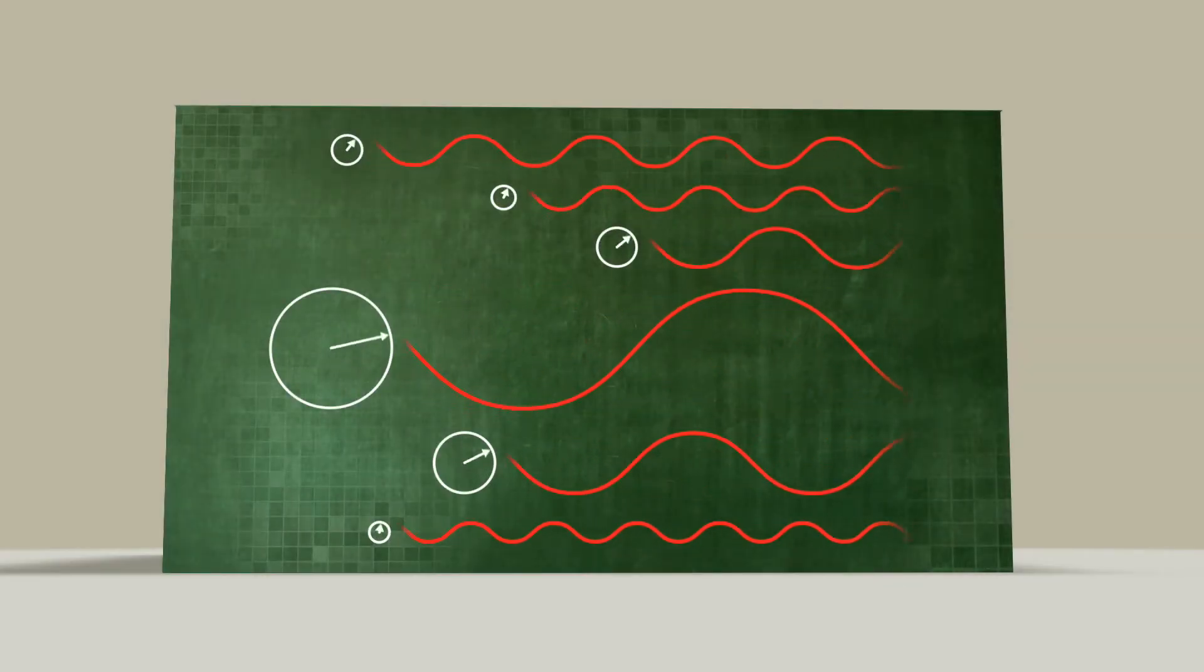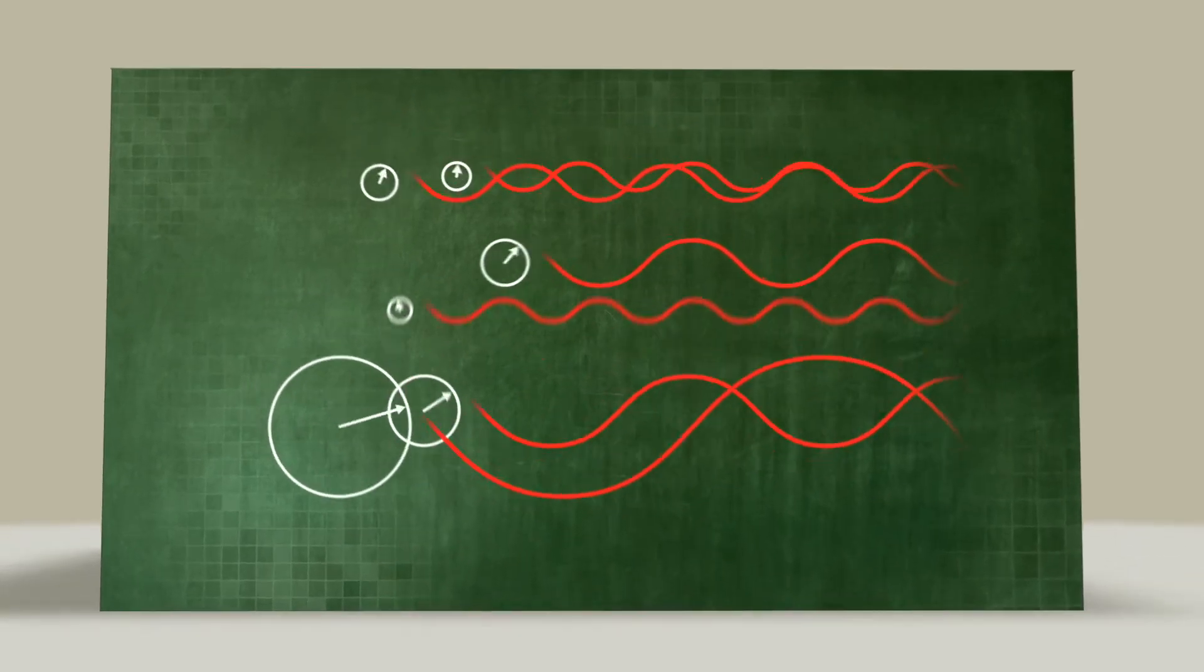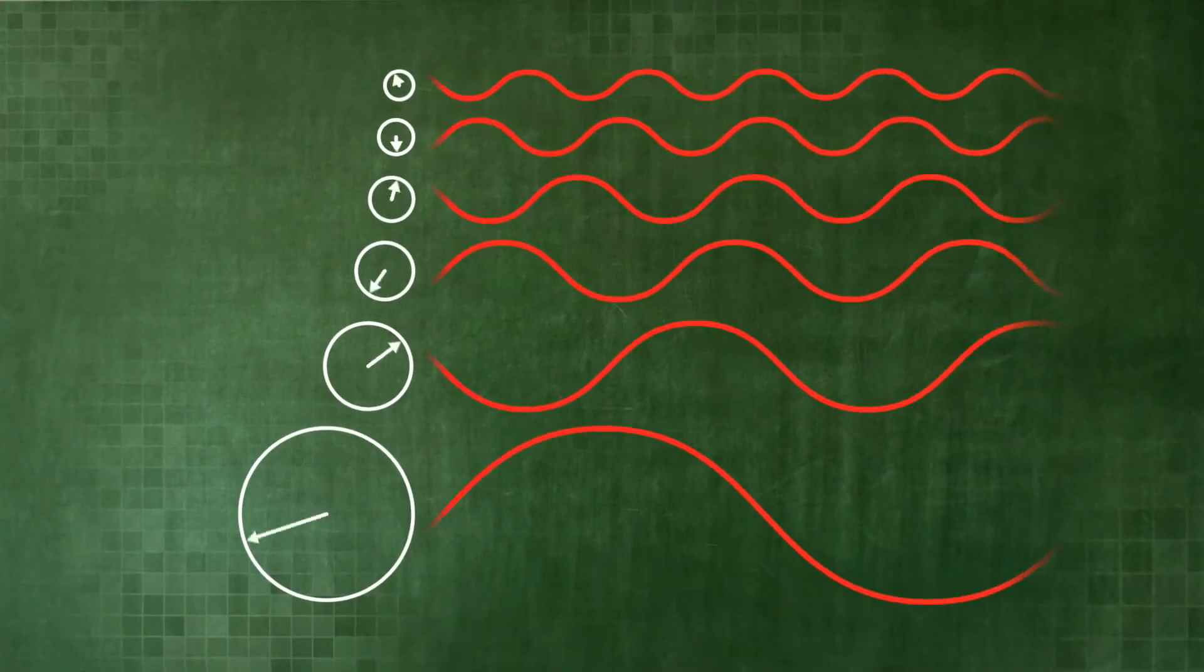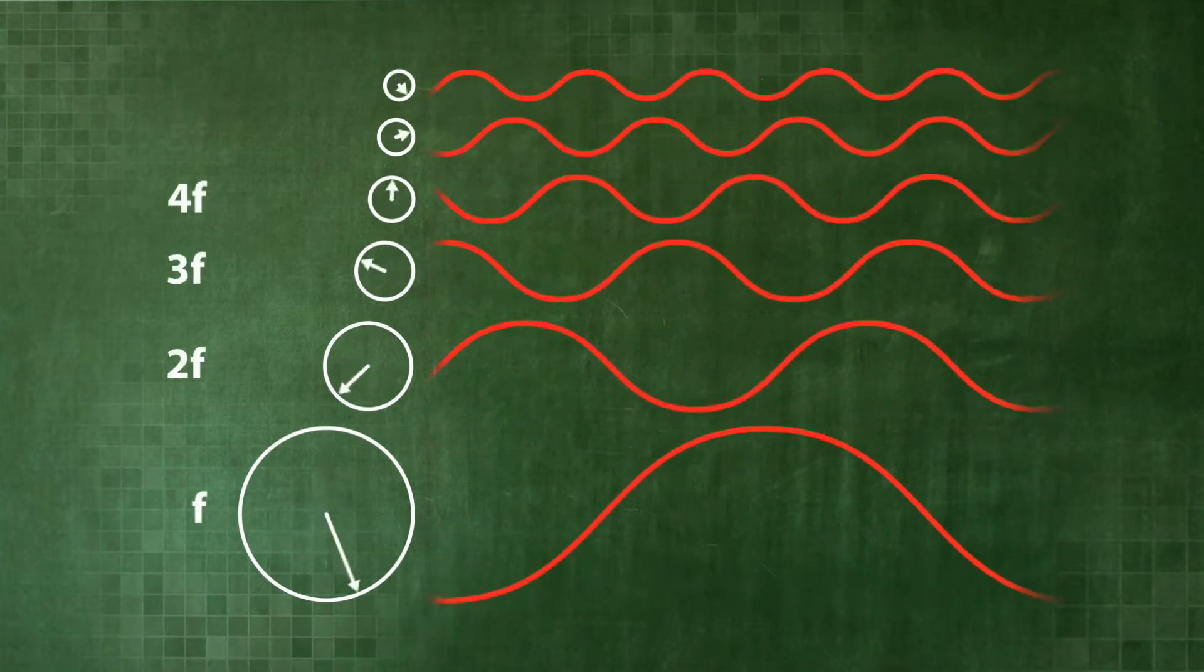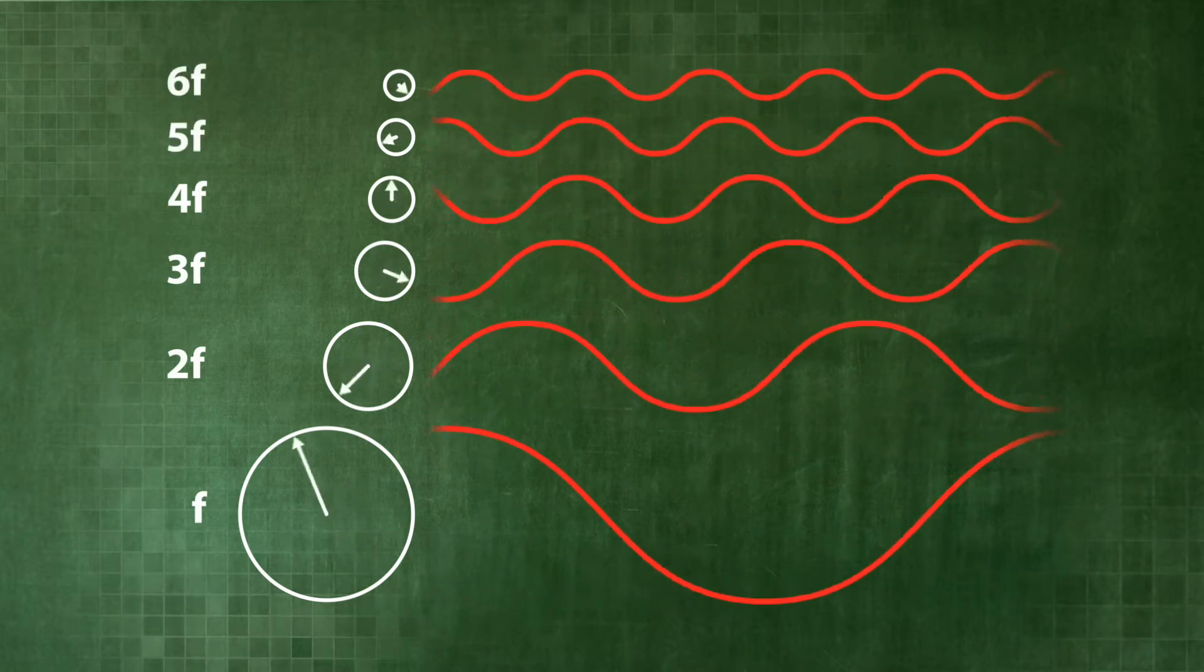Let us consider a superposition of spinning wheels, which are arranged in a very specific way. We have a fundamental frequency f, along with double, triple, quadruple, quintuple and sextuple of that frequency.